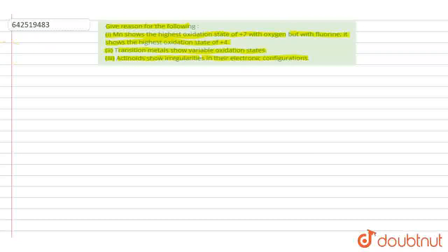Let's start with part 1. When manganese shows the highest oxidation state of +7, manganese combines with oxygen to form Mn2O7. Let's calculate the oxidation state. The oxidation state for manganese: 2x - 14 = 0, so x will be +7.